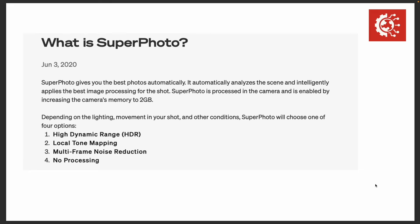Depending on the lighting, the movement in your shot, and other conditions, Superphoto will choose one of four options: either high dynamic range, local tone mapping, multi-frame noise reduction, or no processing at all if the raw image is the best for that shot.